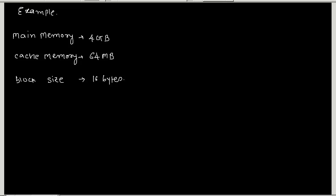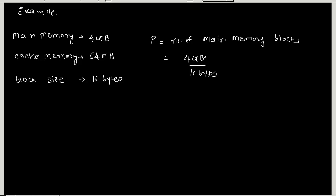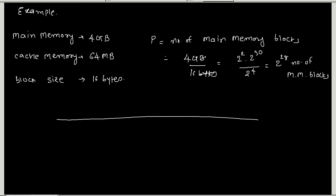Let's take an example. We have main memory of 4 GB, cache memory of 64 MB, and block size of 16 bytes. First, we find small p — the number of main memory blocks — which is 4 GB divided by 16 bytes. That gives us 2 to the power 2 times 2 to the power 30, divided by 2 to the power 4, which equals 2 to the power 28 main memory blocks.